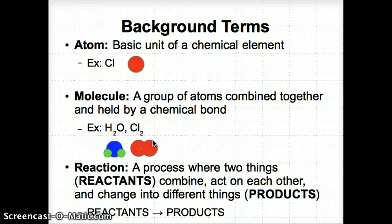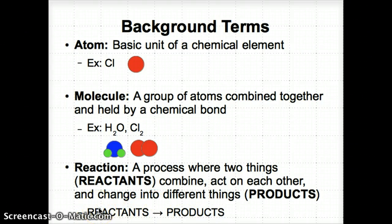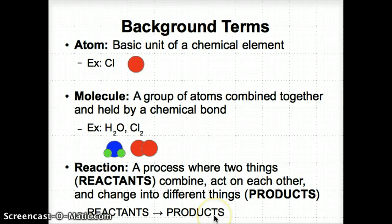Finally, we have reactions. Reactions are processes where two things known as reactants — on the left side of the arrow — combine and change into completely different things known as products, on the right side of the arrow. Think of reactants as what goes into a reaction and products as what comes out — basically what's produced. So: reactants go in, arrow, products come out.